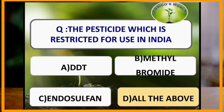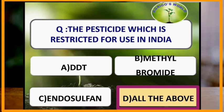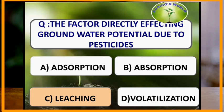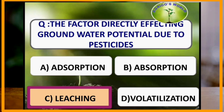The glands which help in secretion of lac are resin glands. Pesticides restricted for use in India include DDT (dichlorodiphenyl trichloroethane), methyl bromide and endosulfan. The factor directly affecting groundwater potential due to pesticides is leaching.